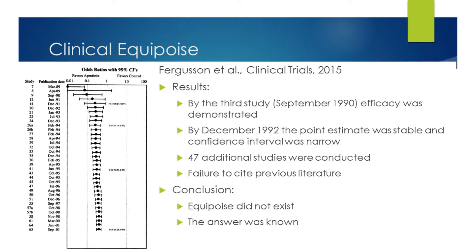So here is that example. On this slide, on the left-hand side, we have the odds ratios — these are the results of the meta-analysis of individual studies from that meta-analysis of the clinical trial published in 2015. These are the study numbers, individual studies, and the publication dates. The first study was published in March 1989 and the last one was published in September 2001.